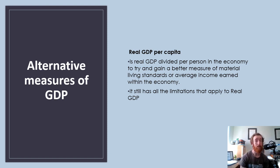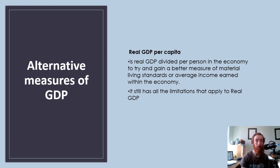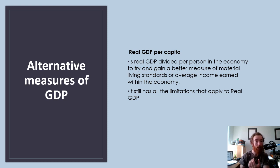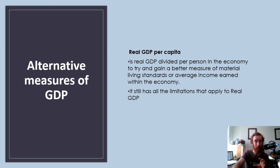Next we look at alternative measures of GDP that try to address some of those limitations. The first one I recommend using most often — because it's the easiest to discuss — is real GDP per capita. You take the real GDP figure and divide it by the number of people in that economy, giving a better measure of material living standards or average income earned. If that number is increasing, it's positive because you're producing more per person. It still has all other limitations of real GDP, like non-market production and guesstimations.